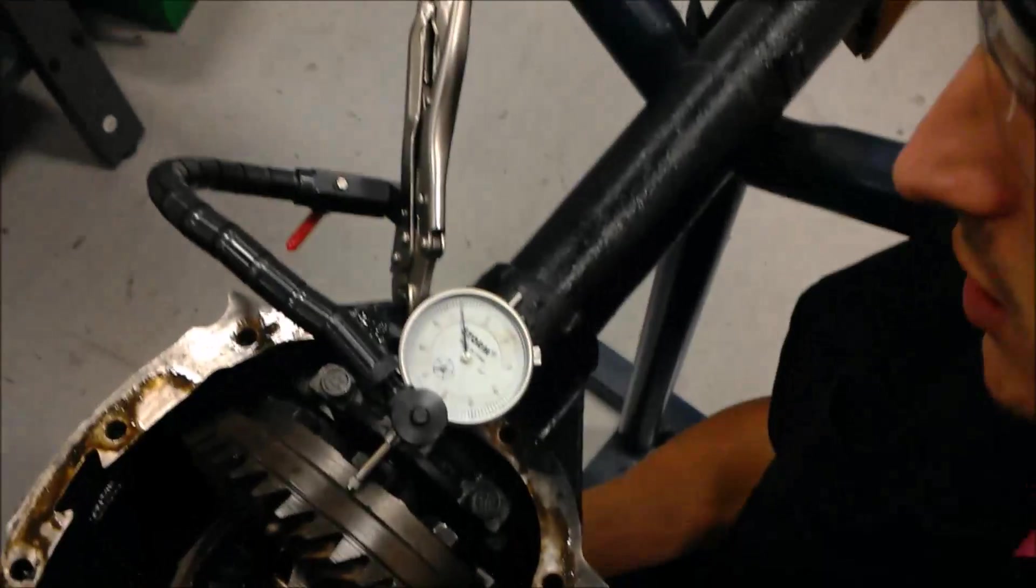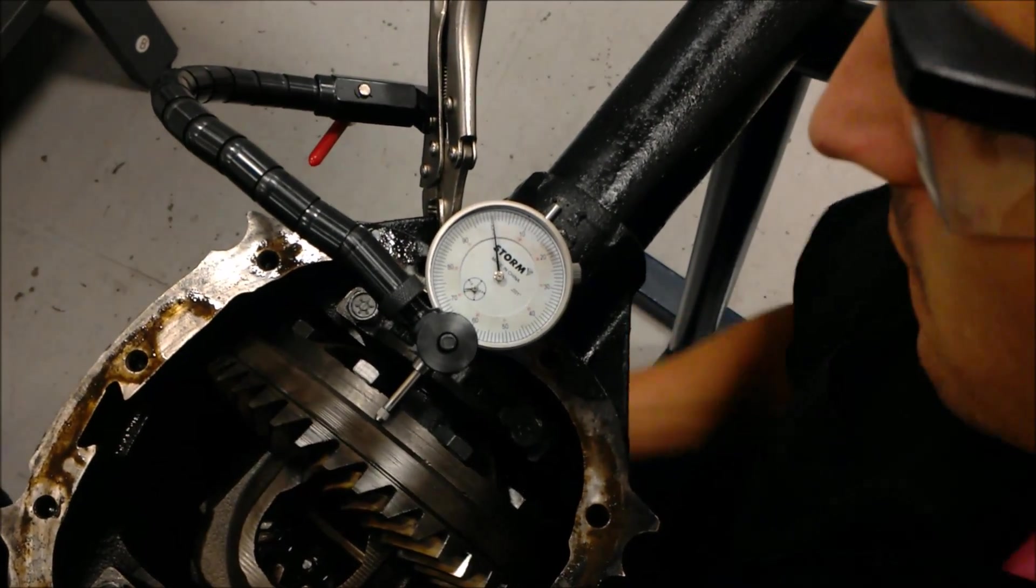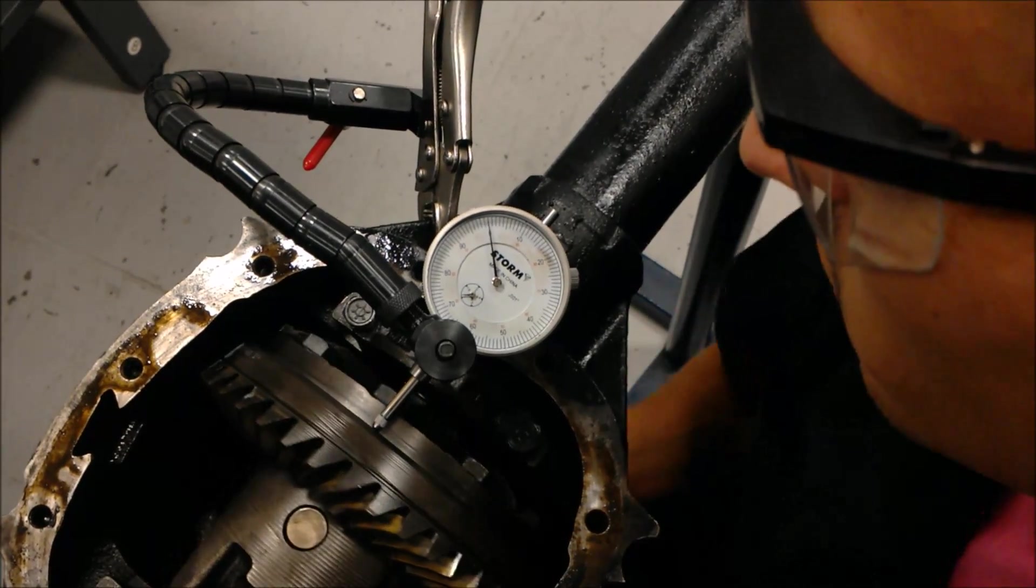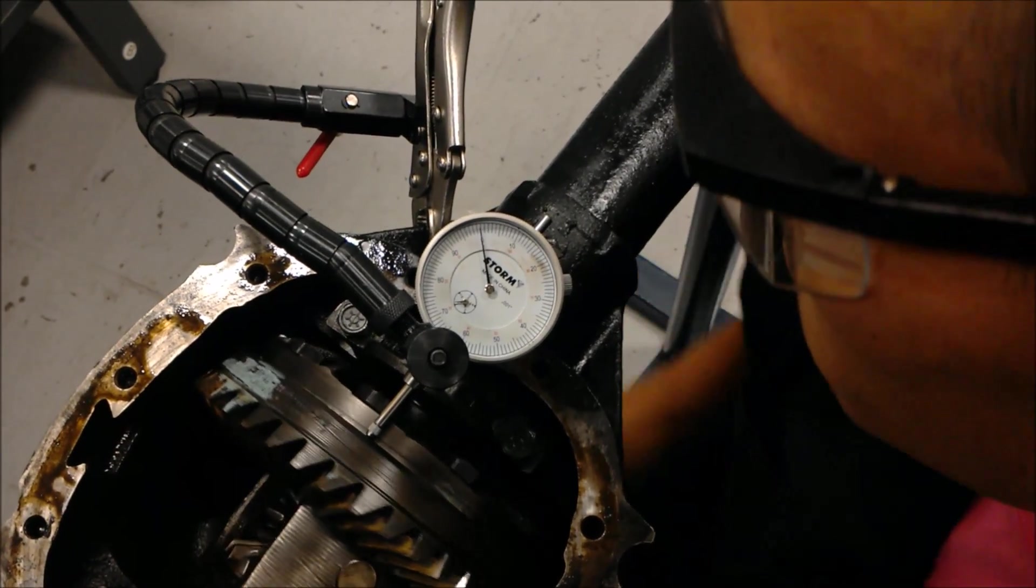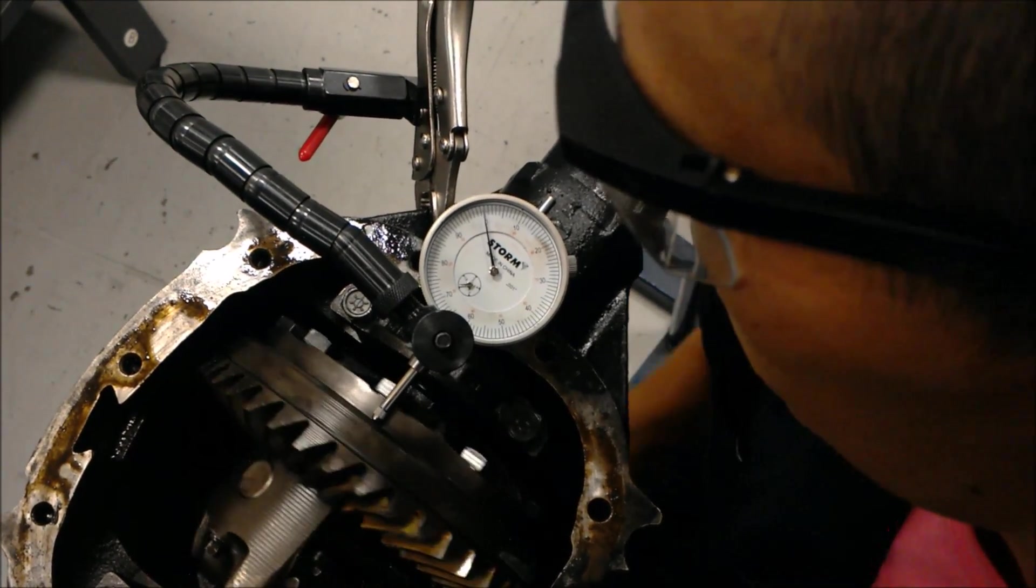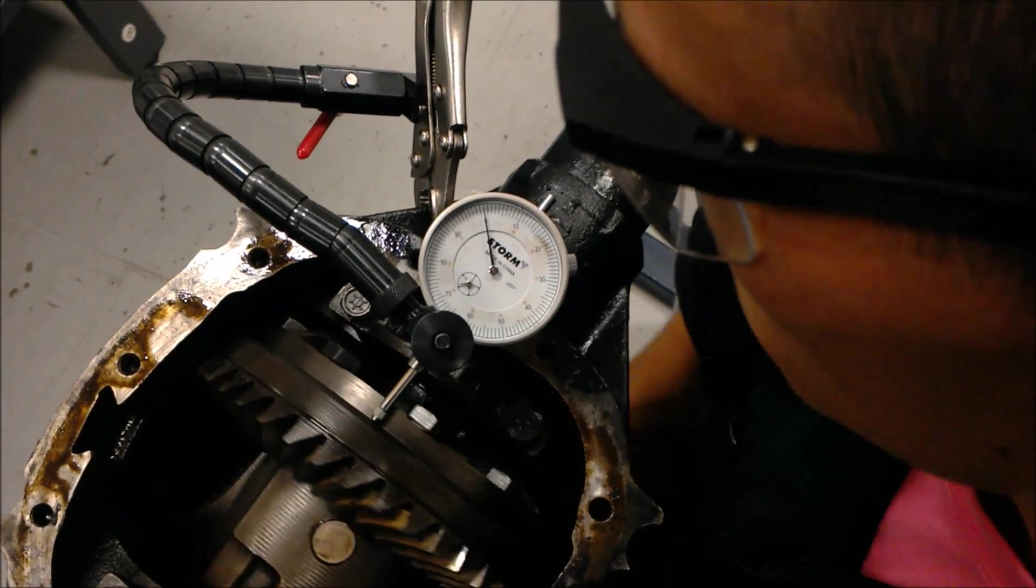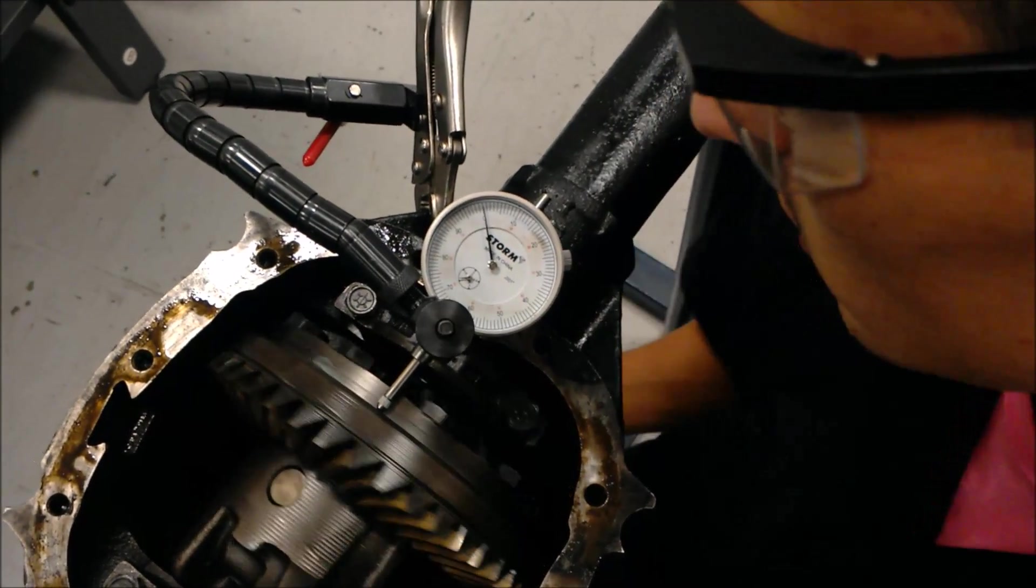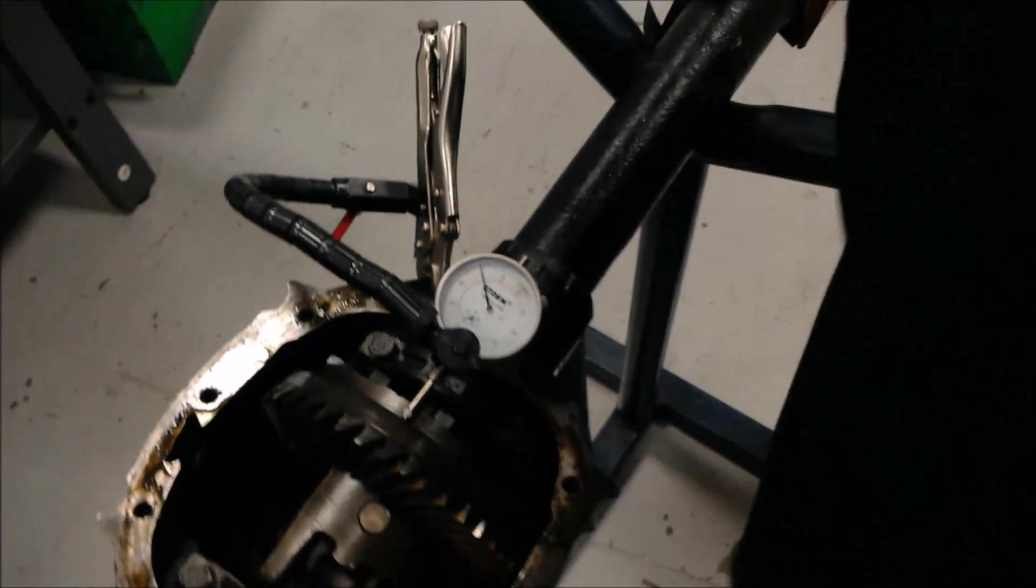We've zeroed it out on the low spot, we'll go ahead and start to turn this guy and see how far it jumps on either side of the zero. It looks like so far we've only got about a half of a thousand jumps, maybe a full thousand. We're heading back. Yeah, so this ring gear here is only going to have about a thousand of run out, which is definitely within spec, so good to go on this one.